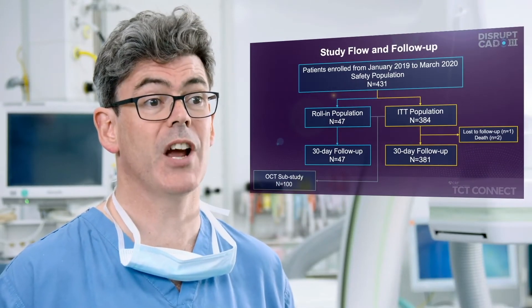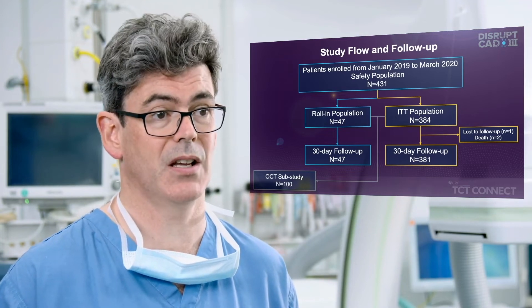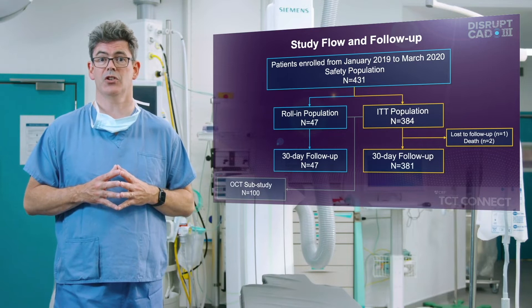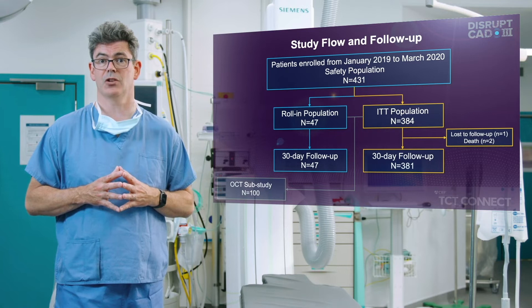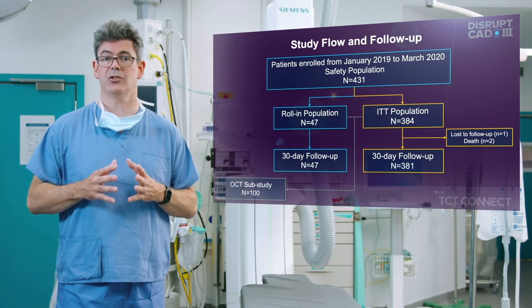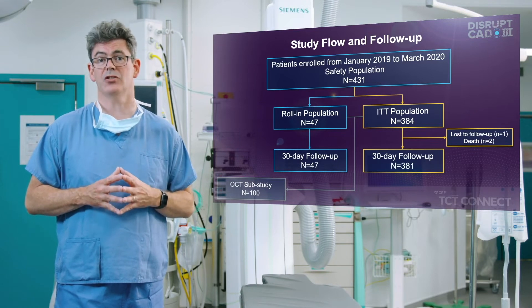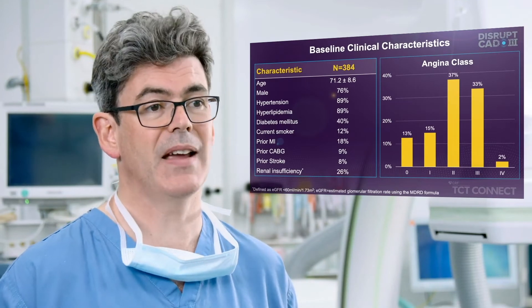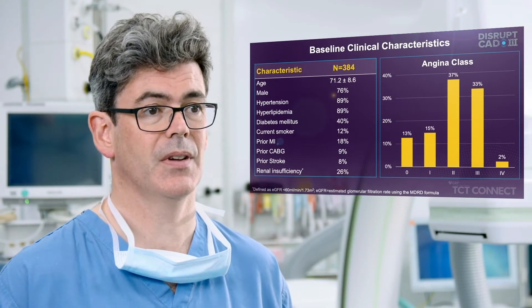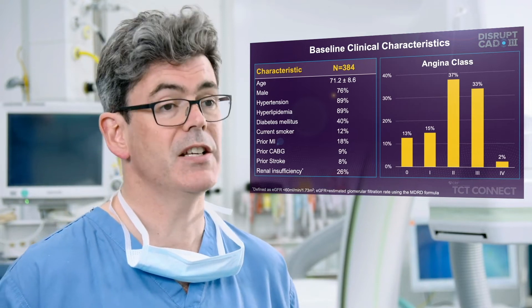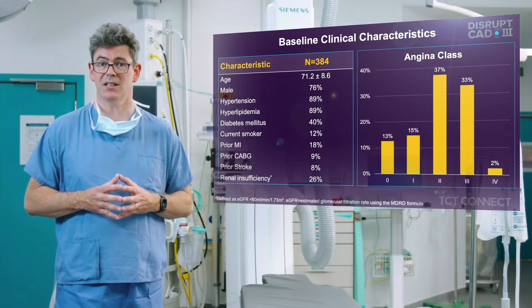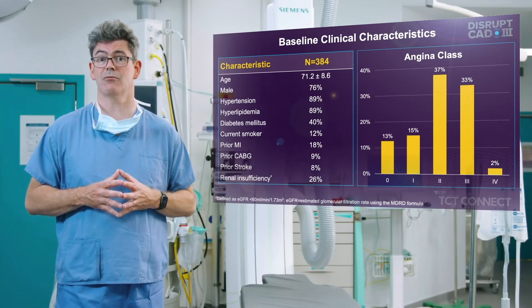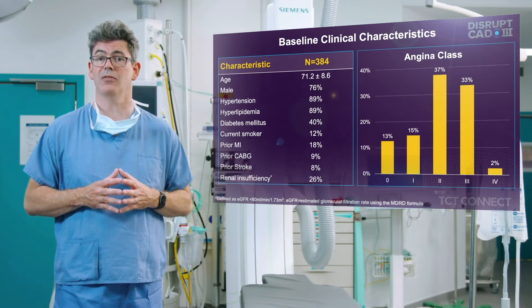Patients were enrolled from January 2019 to March 2020, totalling 431, including 47 roll-in and 384 in the intention-to-treat population. Completeness of follow-up was high, with only one patient lost to follow-up and two deaths. The average age was 71, 90% of patients had either hypertension or hyperlipidemia, and 40% had diabetes.